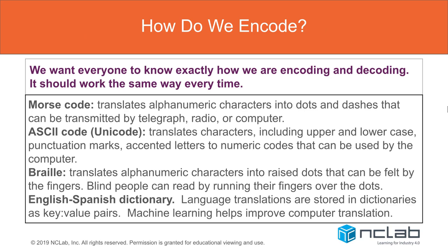With encoding, we want everyone to know exactly how we're encoding and decoding — it's not a secret and it should work the same every time. For example, Braille is a fairly old type of encoding that allows people with limited or no vision to read by touch. Every letter is translated into a pattern based on six dots. Morse code was used for transmitting impulses over wires — this predates voice communication and is an old form of encoding and decoding.